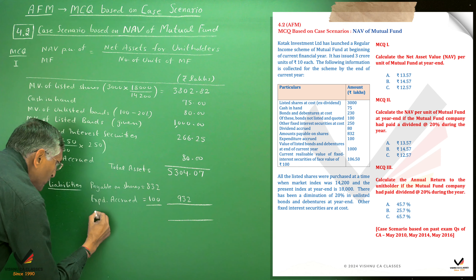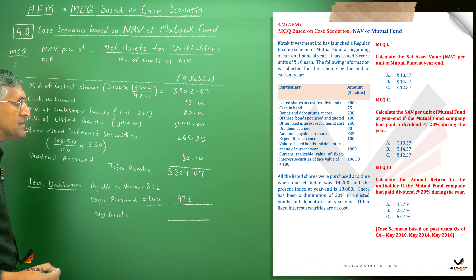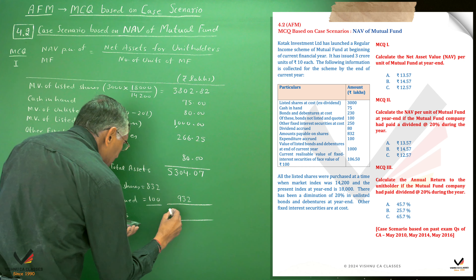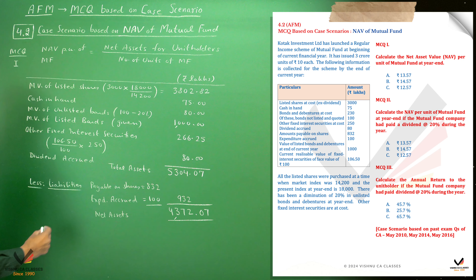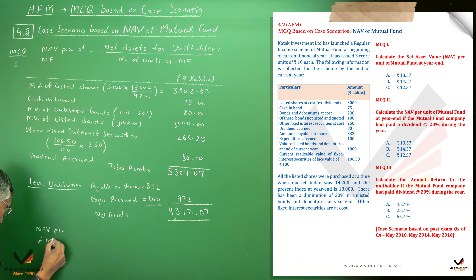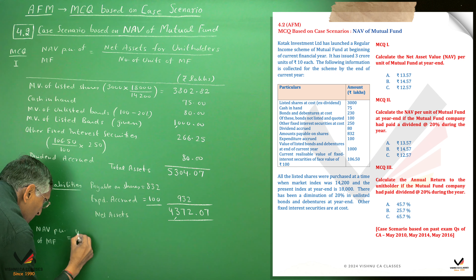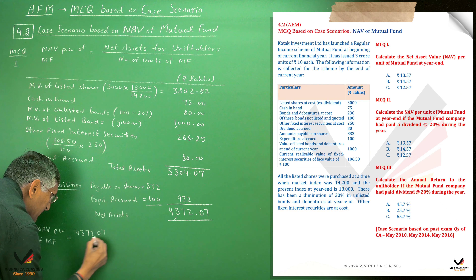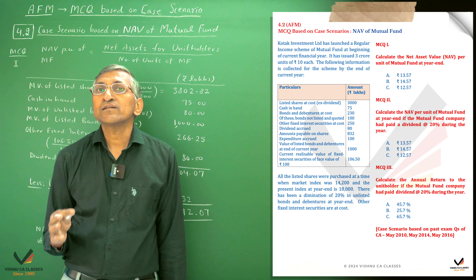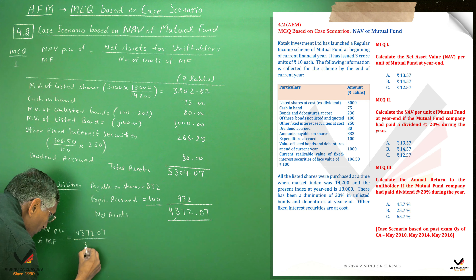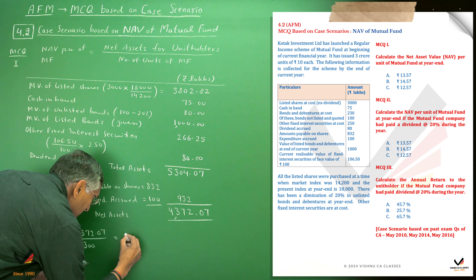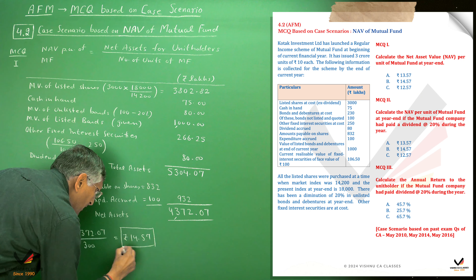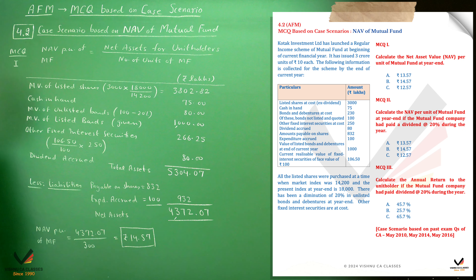Net assets of the mutual fund company at year end = 5,304.07 minus 932 = 4,372.07 lakhs. NAV per unit = net assets divided by number of units = 4,372.07 / 300 lakhs units = rupees 14.57 per unit. So the correct answer is Option B.